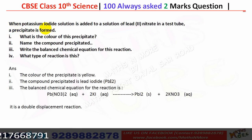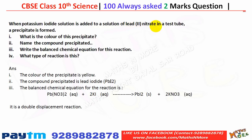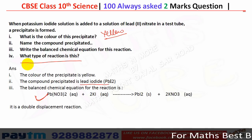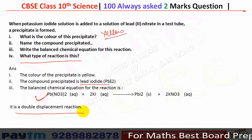When potassium iodide solution is added to a solution of lead nitrate, a precipitate is formed. The color of the precipitate is yellow. The compound formed is lead iodide, PbI₂. This is a double displacement reaction.